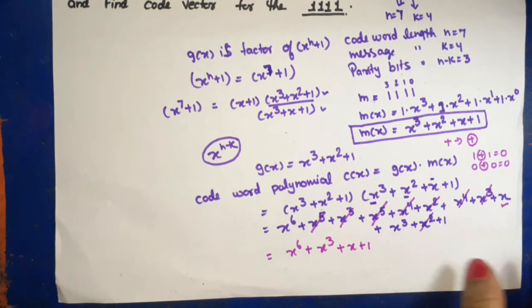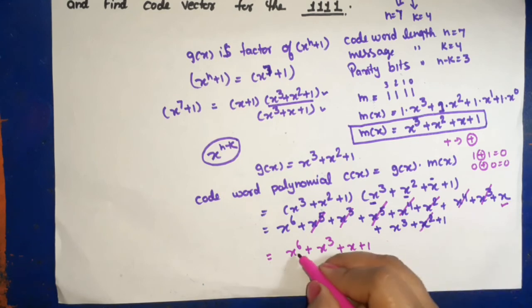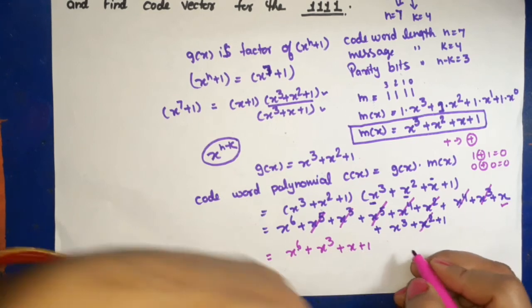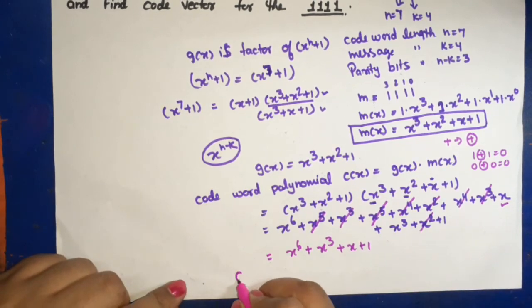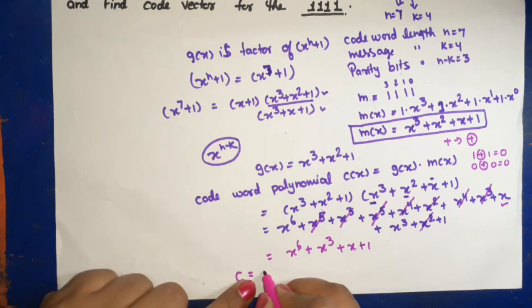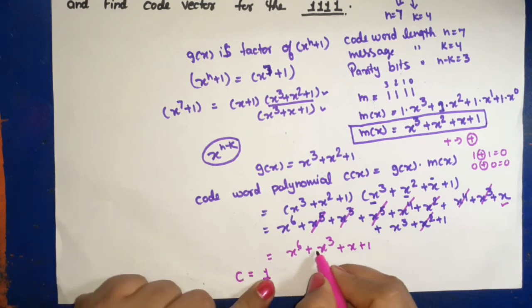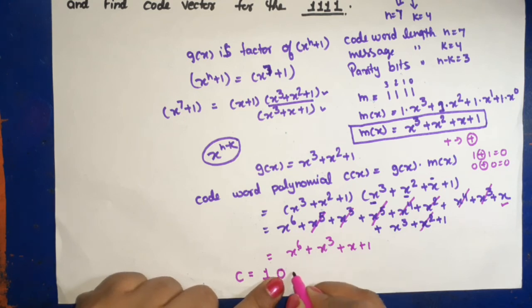So highest power is 6, means when we write c, c is equal to x raise to power 6 means 1, x raise to power 5 is missing means 0, x raise to power 4 is missing 0.